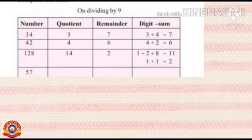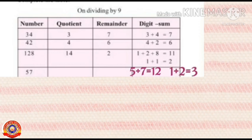Next 57. To find its remainder, add 5 and 7. 5 plus 7 equals 12. 12 is more than 9. So, again we have to add the digits in 12. That means add 1 and 2. 1 plus 2 equals 3. So, the remainder is 3.